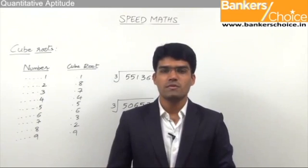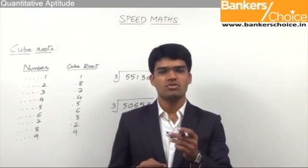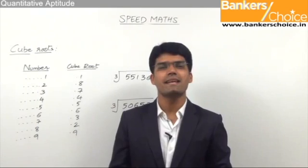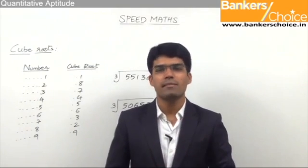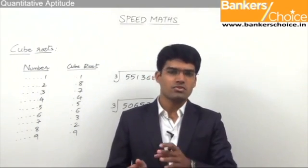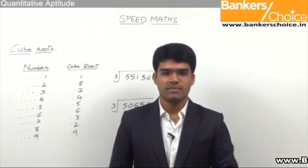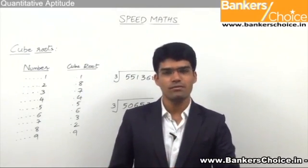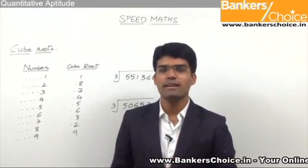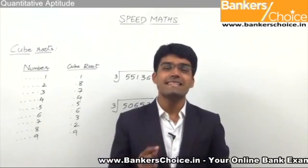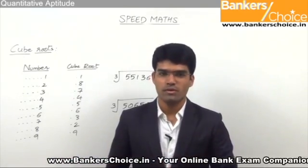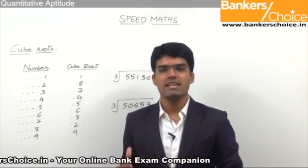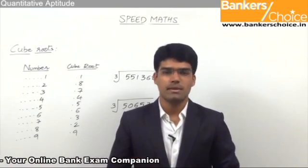In the case of square roots, we had three steps. The first step was to check the unit digit and find out the possible unit digits of the answer. The second step is to decide what the remaining part of the answer will be, and the third step is to check which of the two answers is correct. A similar procedure can also be applied in the case of cube roots, but finding cube roots is easier compared to square roots. In square roots we have three steps, but in cube roots we have only two steps.